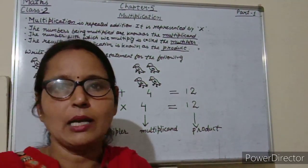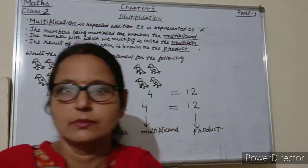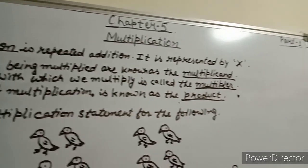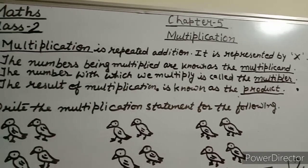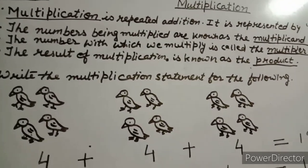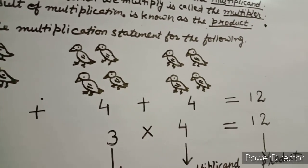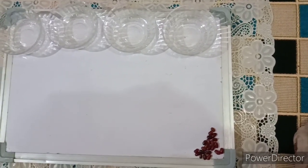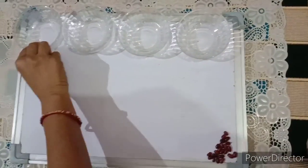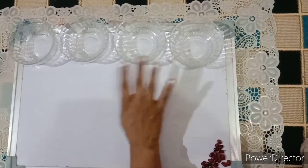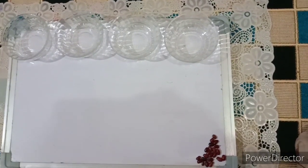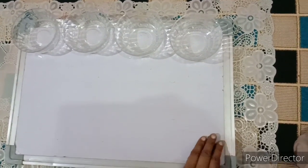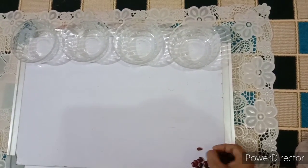I am going to show you an activity. These are balls — there are 4 balls — and in each bowl I am putting 3 beans.